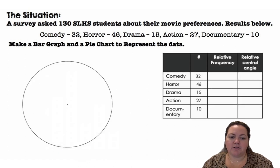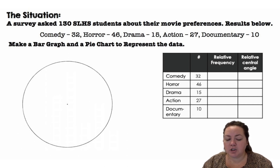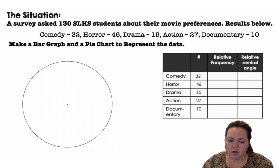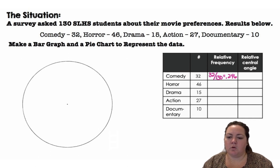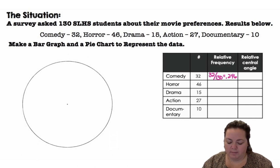To make a pie chart or circle graph, we have to get the percentage and then the central angle. The percentage is the relative frequency, so I have to divide by the total. There were 130 total students asked, so I'm going to take each value and divide by 130 and get a decimal. So 0.246, or 24.6%, chose comedy.